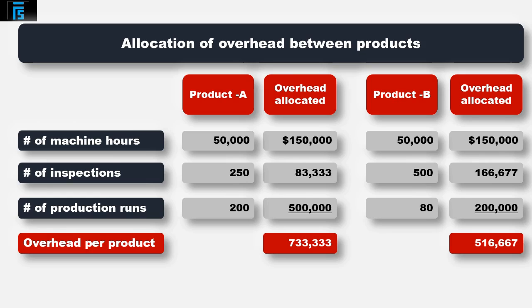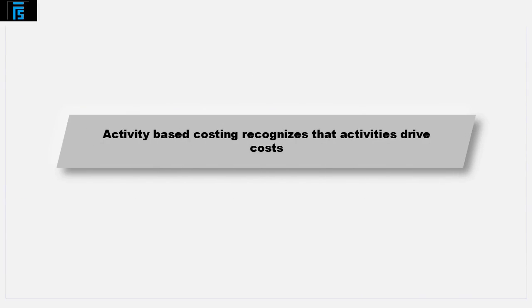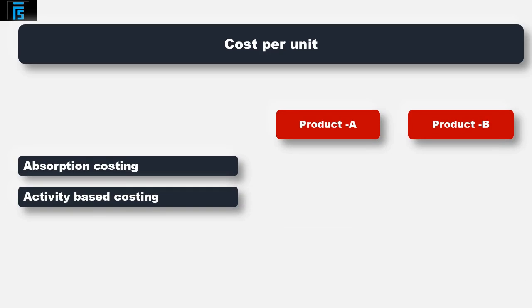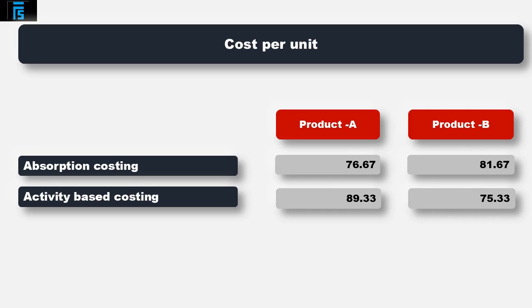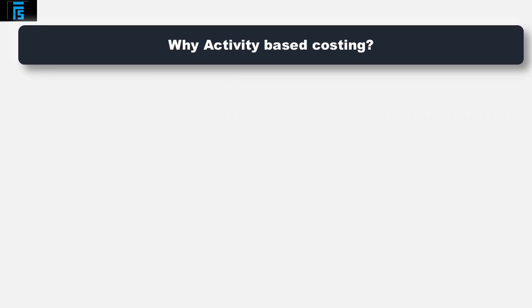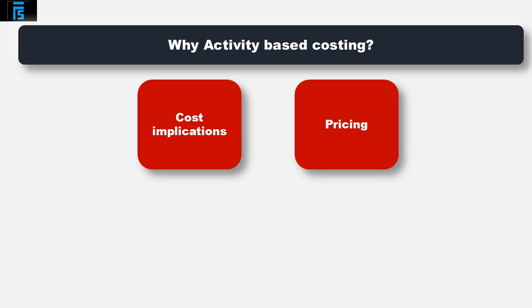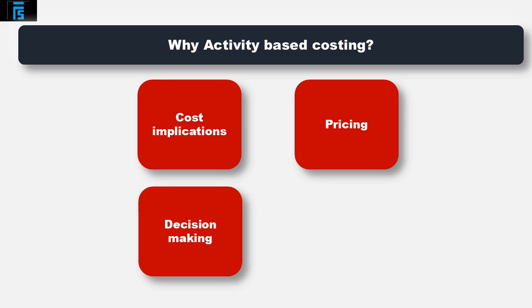Activity based costing considers the activities that drive costs and traces overhead to products based on this. Essentially, the more activities or the more use of company resources, the greater the overhead absorbed. Overall, there is a different cost per unit when comparing absorption costing and activity based costing. Under activity based costing, Product A's cost per unit has increased from $76.67 to $89.33, while Product B has seen a decrease from $81.67 to $75.33. Given the more precise allocation of overhead, each unit has a more accurate cost, with knock-on implications for product pricing decisions, product viability, and longer-term company decision-making and planning.